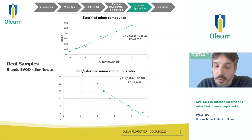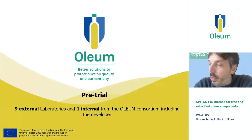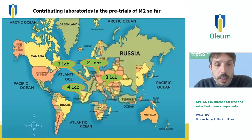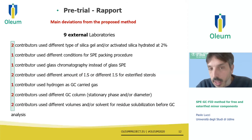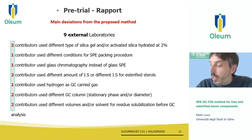This means that even a small addition of sunflower oil can lead to significant changes in these two parameters: the total esterified compounds and the ratio between free and esterified fractions. As Paul and Tassos showed previously, this method was submitted to pre-trial studies. Nine external laboratories participated in this pre-trial, located across Europe. The results were not so good from an analytical point of view because the reproducibility was quite poor, and several labs made important deviations from the SOP.